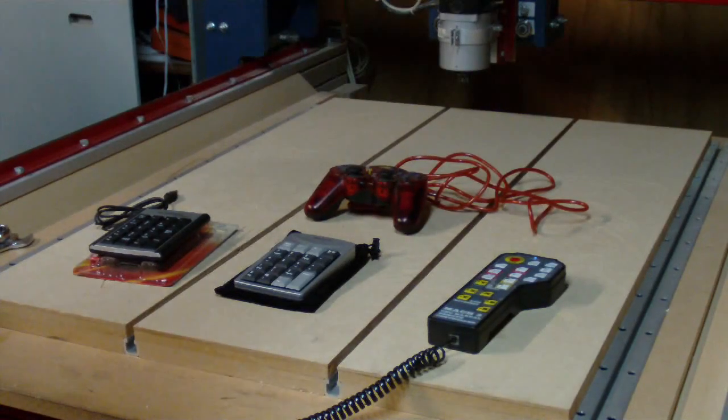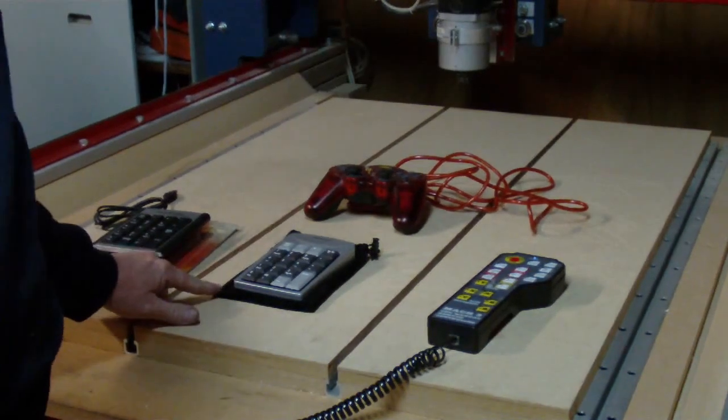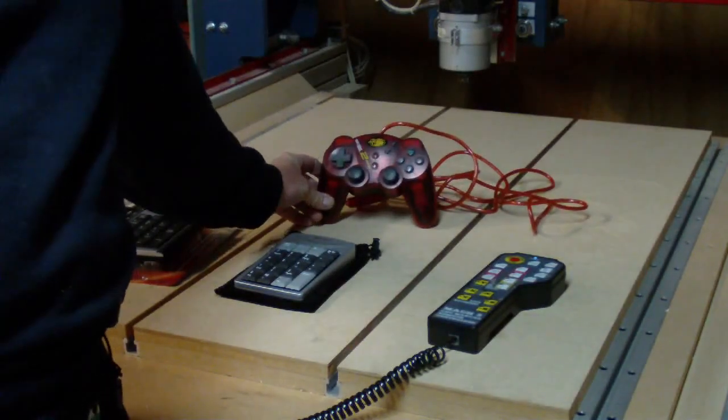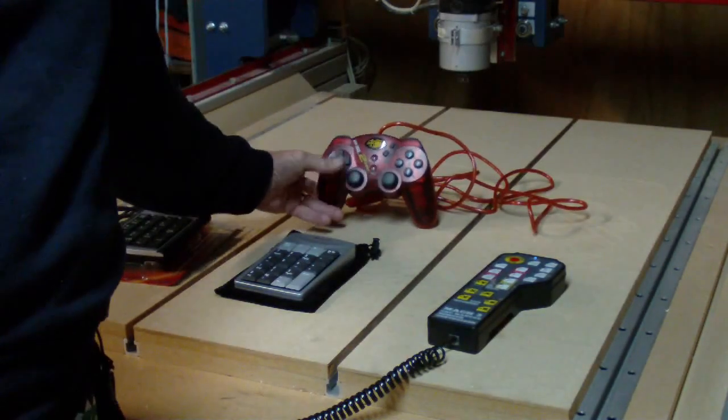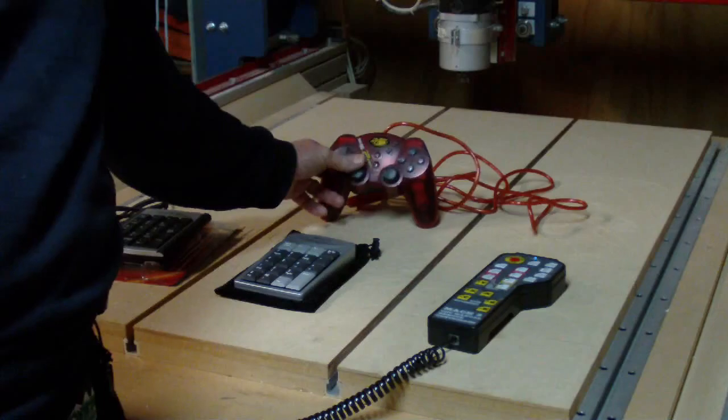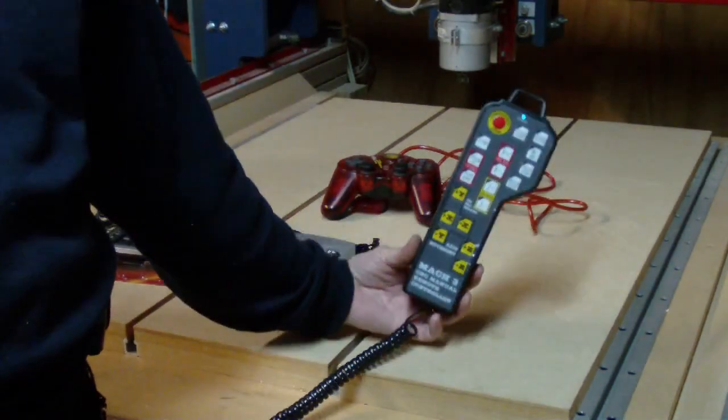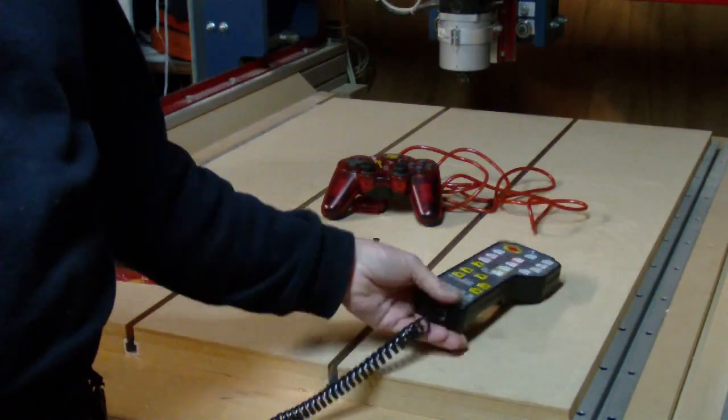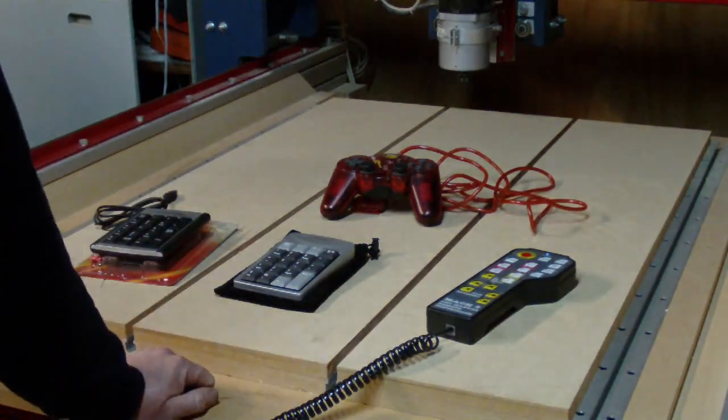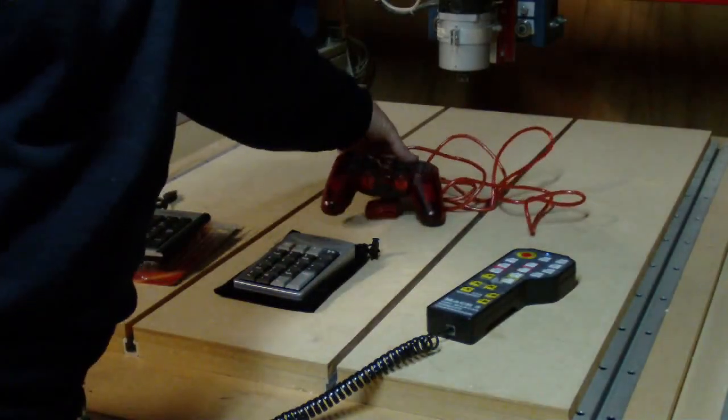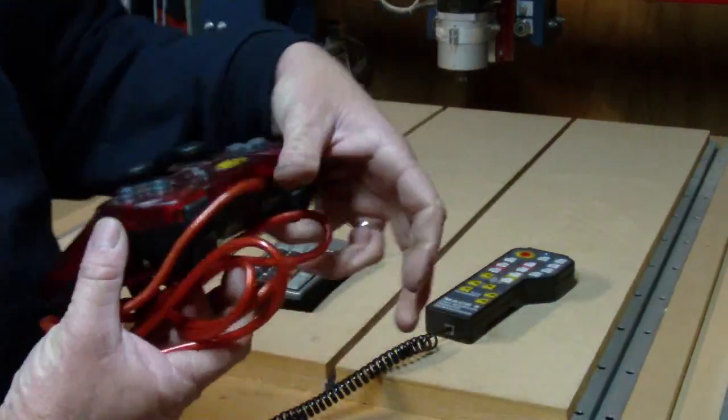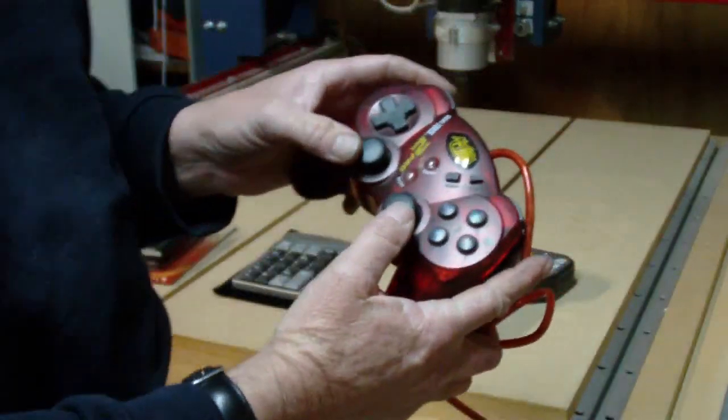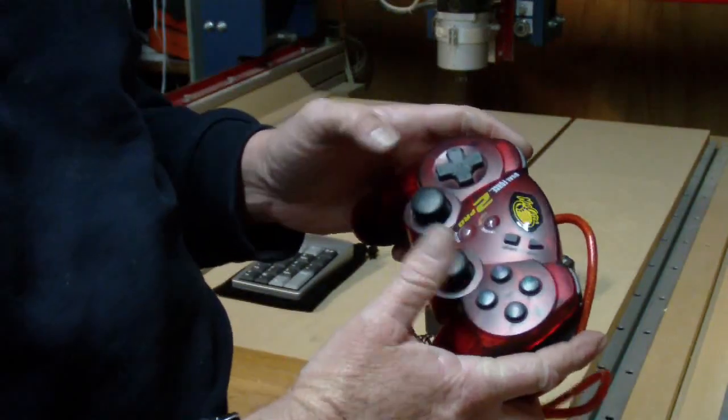The three options that I've tried are a number keypad, I've got two here, a games console joystick controller, and an actual purpose-made pendant for Mach 3. I'm going to start with the game console controller. Now this I found to be quite good. You can use the joystick controls, but those I didn't like.